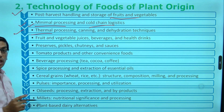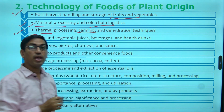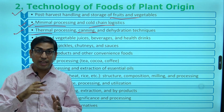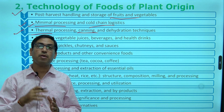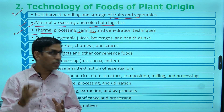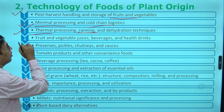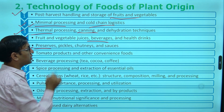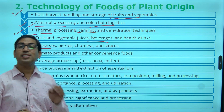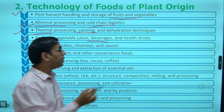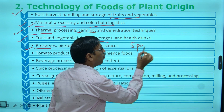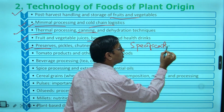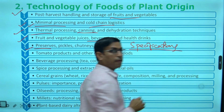Thermal processing, scanning, canning — all canning techniques are important. What is exhausting, what is the specific time and temperature for the same? Juices, beverages, preserves, pickles, sauces, chutney — we have to know about the specifications for everything.